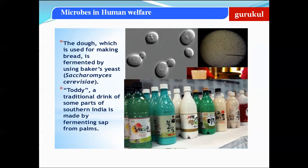The second important household product made using microbes is dough, which is used for making bread. This dough is prepared by the fermenting action of baker's yeast called Saccharomyces cerevisiae. The dough used for bread preparation is made by fermenting using baker's yeast, Saccharomyces cerevisiae.